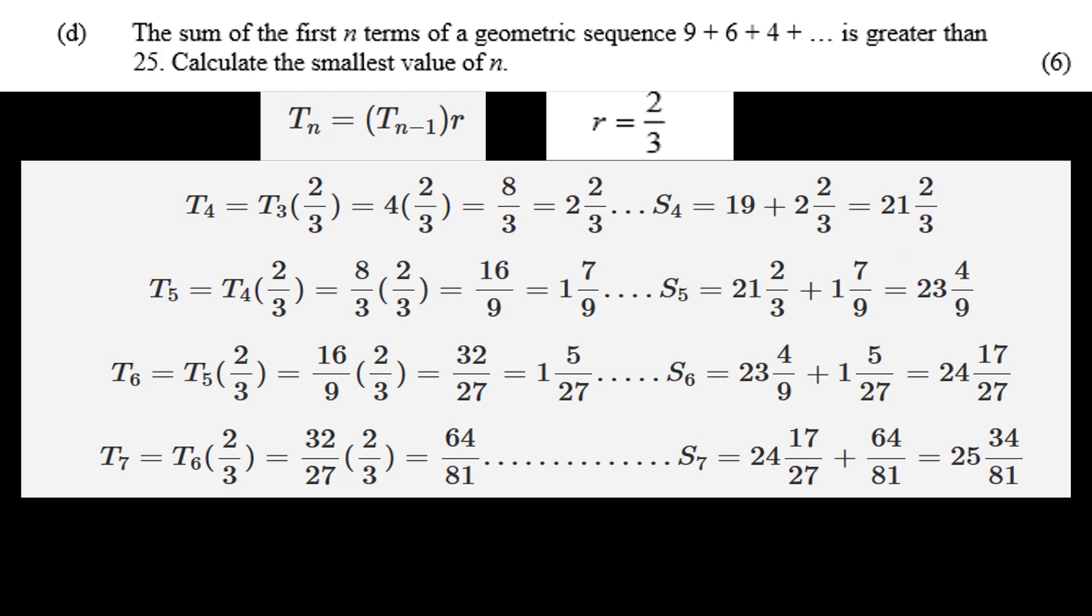S5, with the same kind of arithmetic, gives 23 and 4 ninths. S6 gives 24 and 17 over 27. But this is still under 25, but we are nearly there. S7 equals 25 and 24 over 81, which is greater than 25.